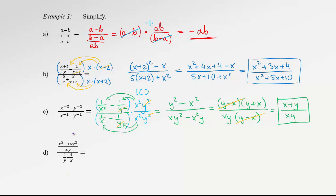In the last example, since we already have a single fraction in the numerator, let's employ Method 1. We just need to make a single fraction out of the big denominator. Copy x squared minus 16y squared over xy — everything over — and perform the subtraction with common denominator xy: we get x minus 4y in the numerator. Now let's convert this main division into multiplication by the reciprocal.